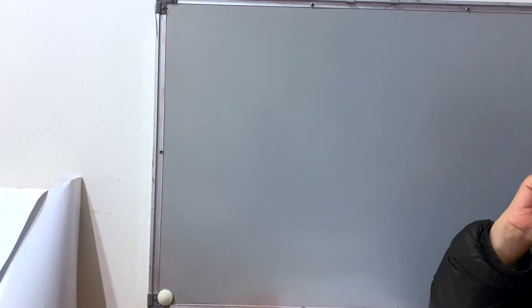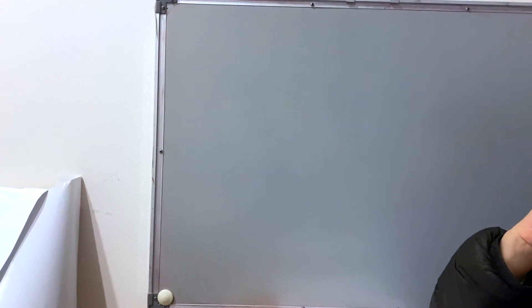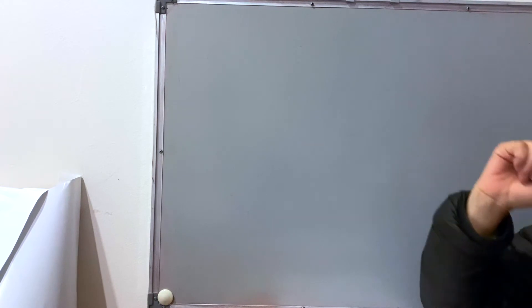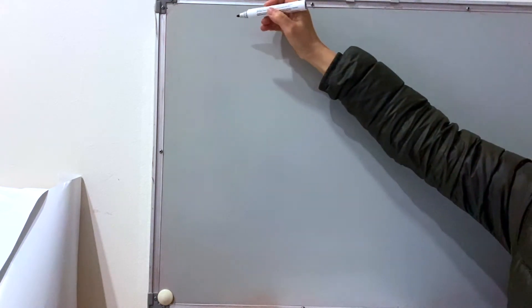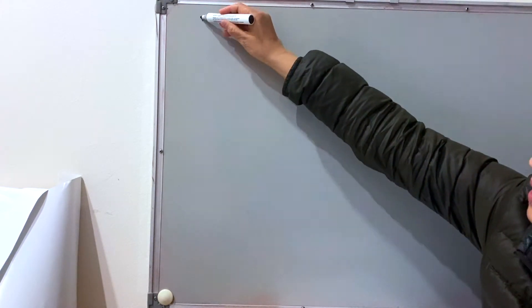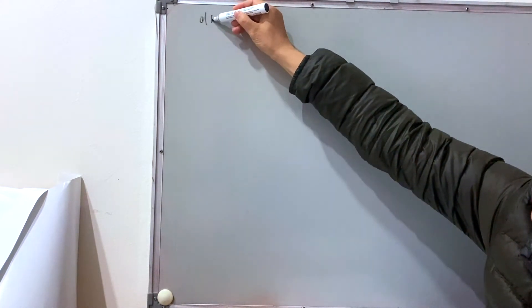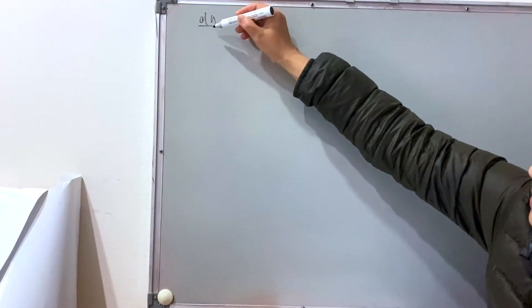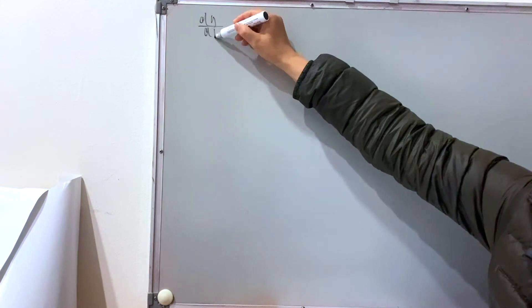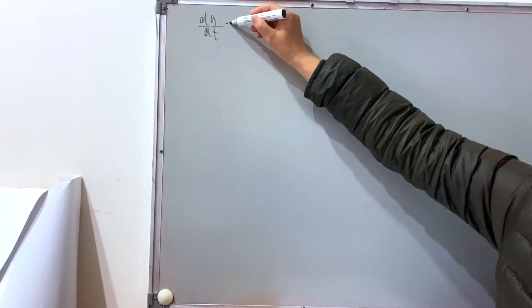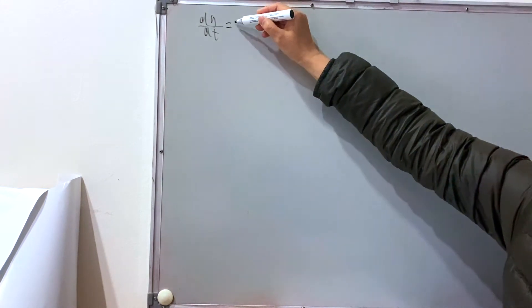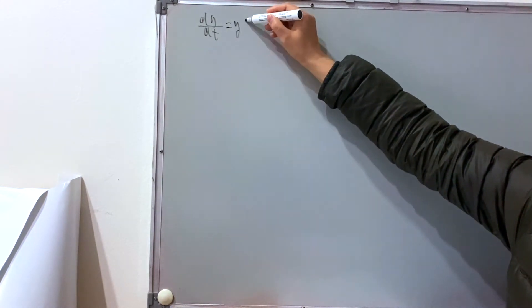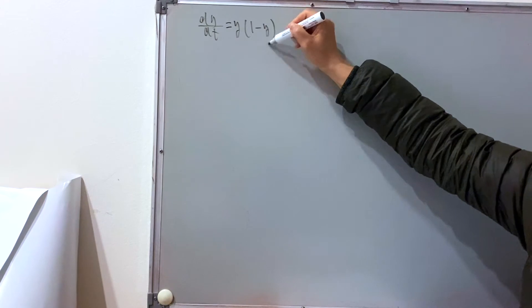Today we do question 14b, differentiation equations. Given dy/dt equals y times (1 minus y).